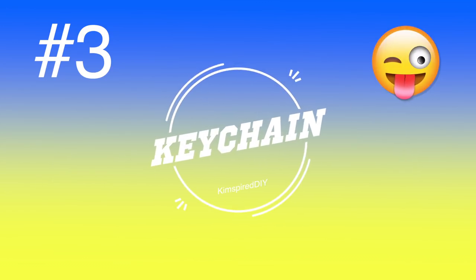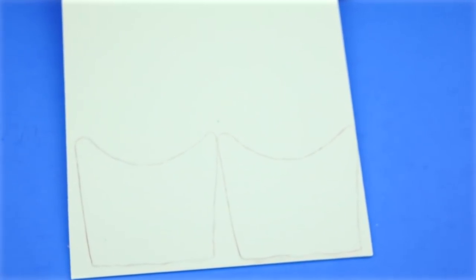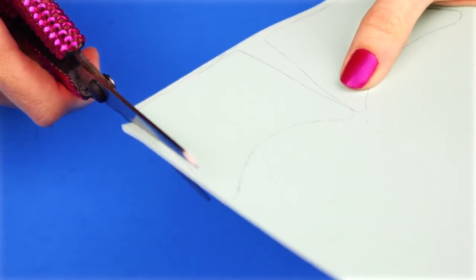The third DIY will be a super fun keychain. For this one, I'm just going to use a piece of foam. On the foam, I drew two identical images representing a fry box and then I cut those out.